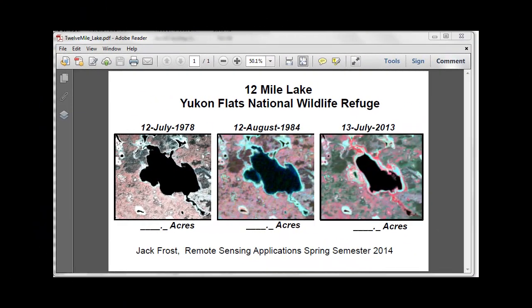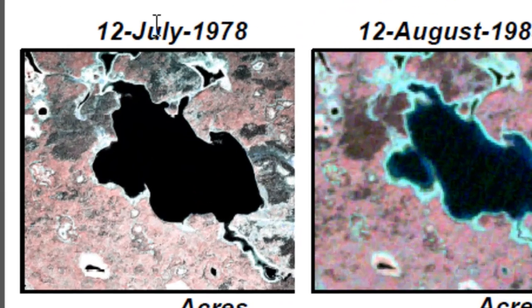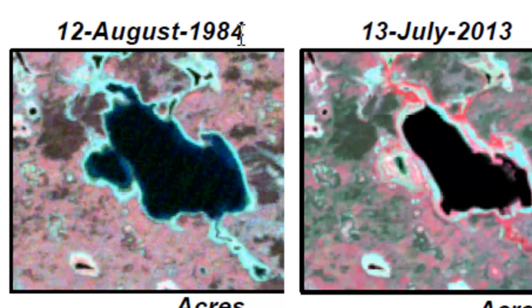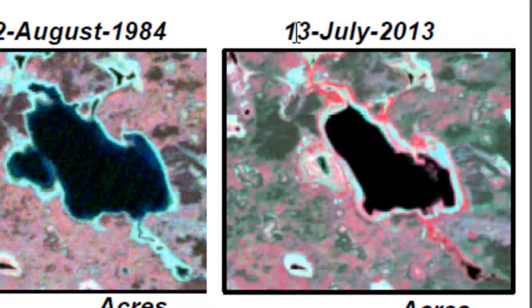Welcome back to Remote Sensing Applications using ArcGIS. In this week, one of the many projects you can do is a time series of lake open water during a warming climate trend in Boreal Alaska. We'll download a color infrared photograph from July 12, 1978, a Landsat Thematic Mapper image from August 12, 1984, and a Landsat 8 OLI image from July 13, 2013.